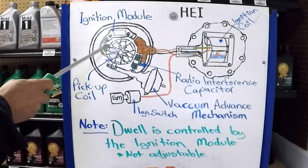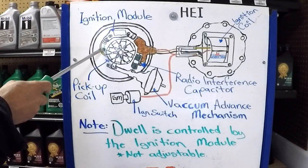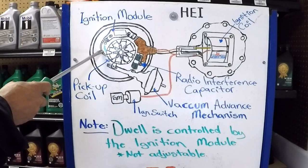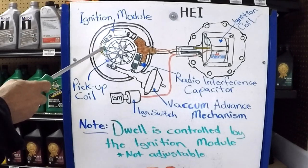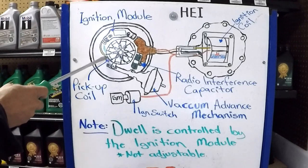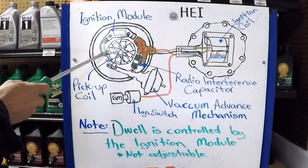And the resistance in between these two terminals is going to be anywhere from 500 to 1500 ohms. If the reading is infinite, meaning that there is no resistance, the pickup coil circuit is open, so it needs to be replaced. And if there is lower resistance than 500 to 1500 ohms, the pickup coil is shorted, so it also needs to be replaced.